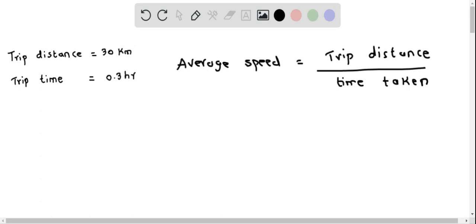Trip distance is 30 kilometers and time taken is 0.3 hours. We can convert this decimal 0.3 by multiplying by 10. So I multiply and divide both the numerator and denominator by 10.